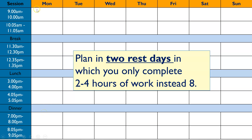Then it's thinking about what you're actually going to be putting into each of these slots. You need to state the subject, the topic, and briefly mention the activity. For example, Monday morning might be: Biology — DNA replication — enzyme flashcards. That way, when you come to do this revision, you aren't wasting time thinking about which topic to look at or what activity to do — you've already invested the time beforehand to completely plan it out so you can be really productive.